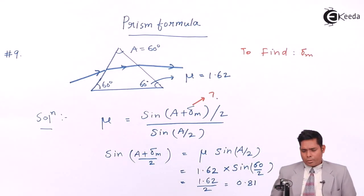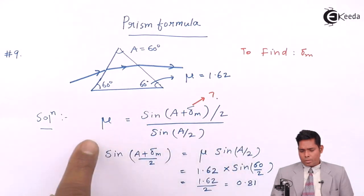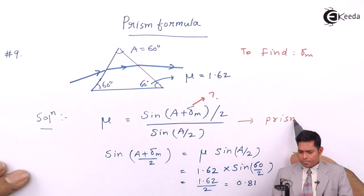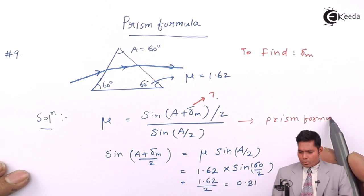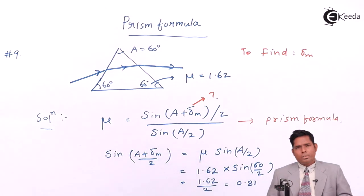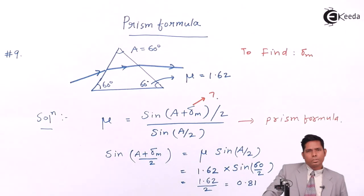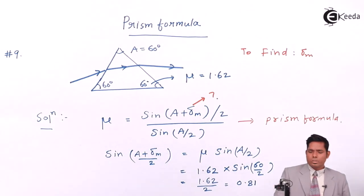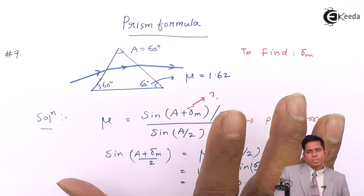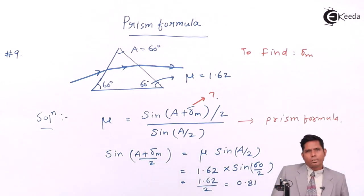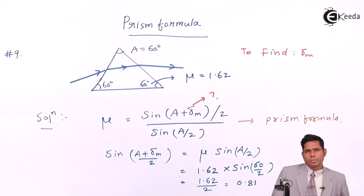We put the refractive index value into the prism formula. Remember: you can use the prism formula only when the minimum deviation is given. If only the angle of deviation is given — not the angle of minimum deviation — you cannot use this formula, because delta m stands for angle of minimum deviation, not angle of deviation. So the final answer is 48 degrees and 12 minutes.